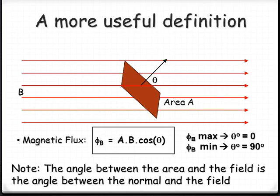So the angle between the area and the field is between the normal and the field.